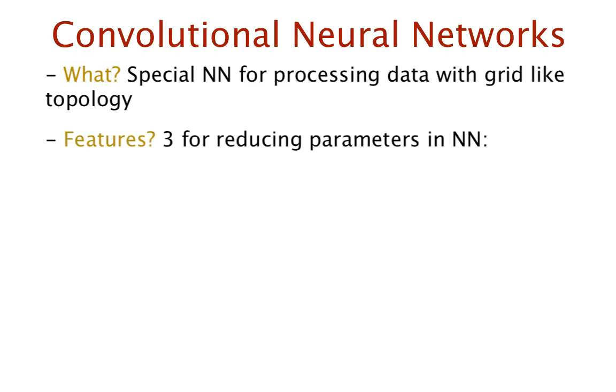Convolutional Neural Networks have three fundamental features that reduce the number of parameters in a neural network. Up first, we have sparse interactions between layers.